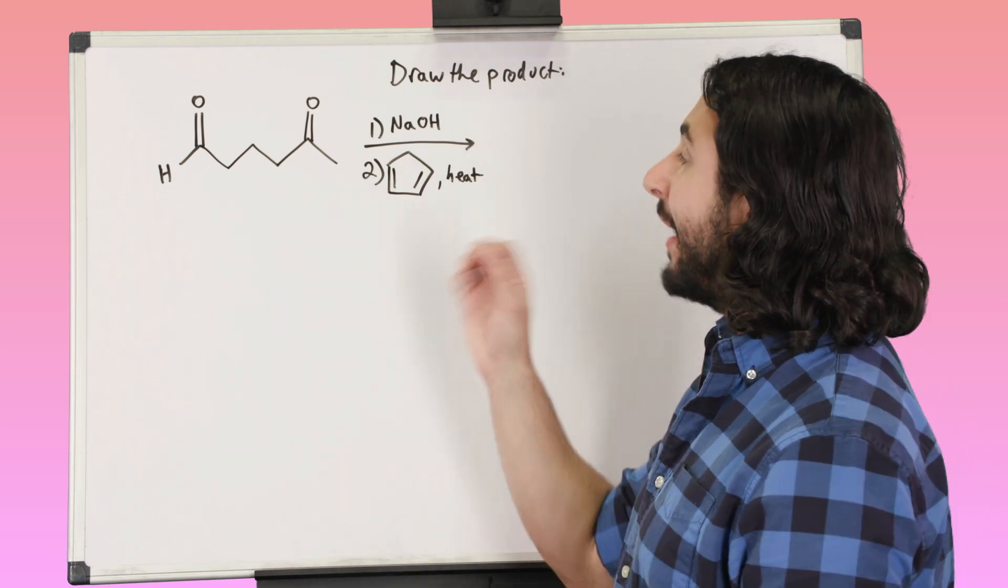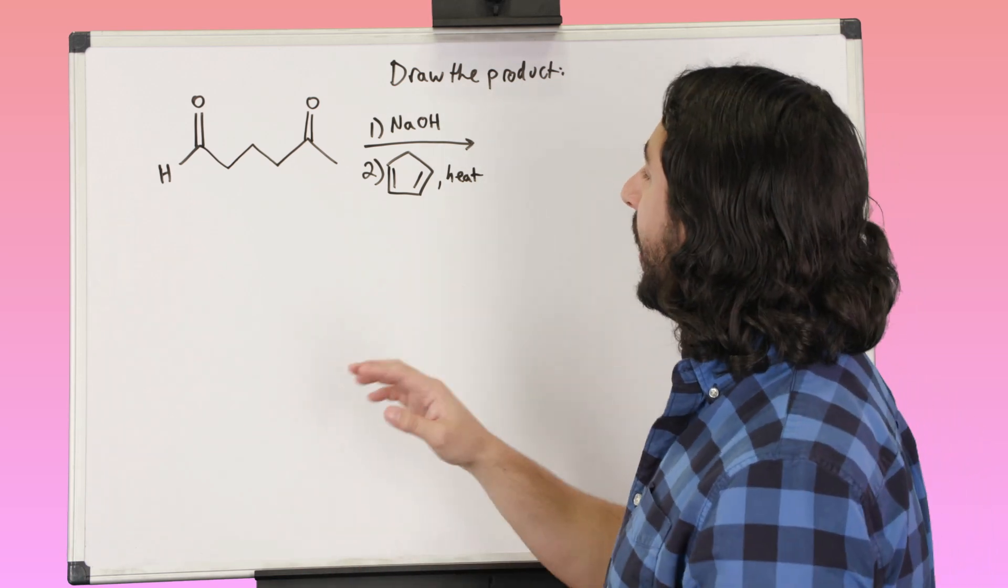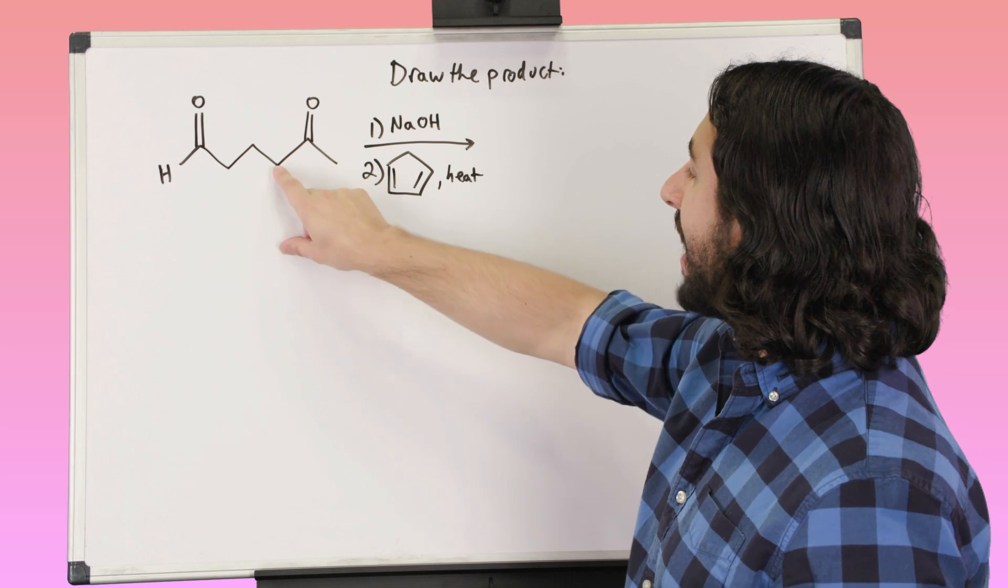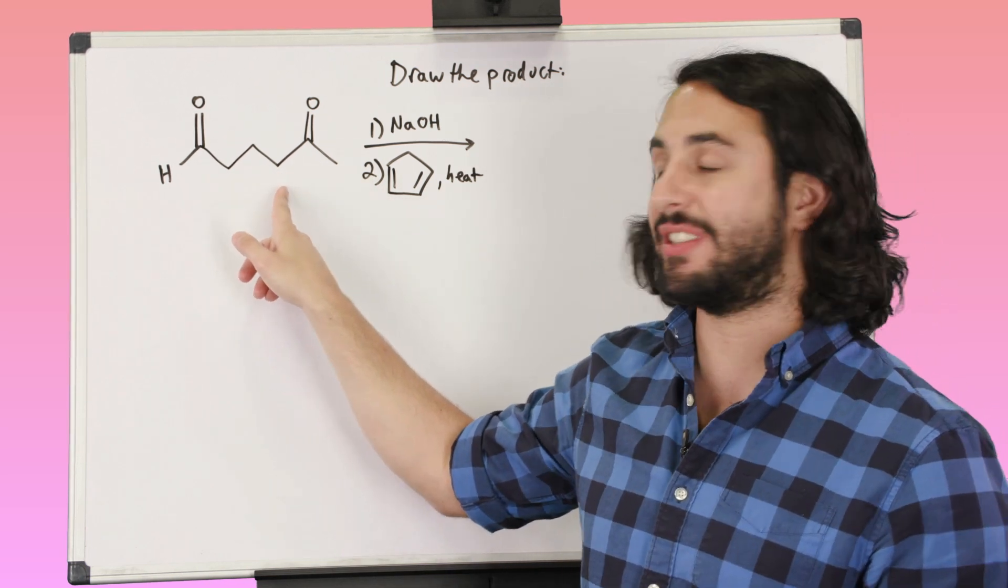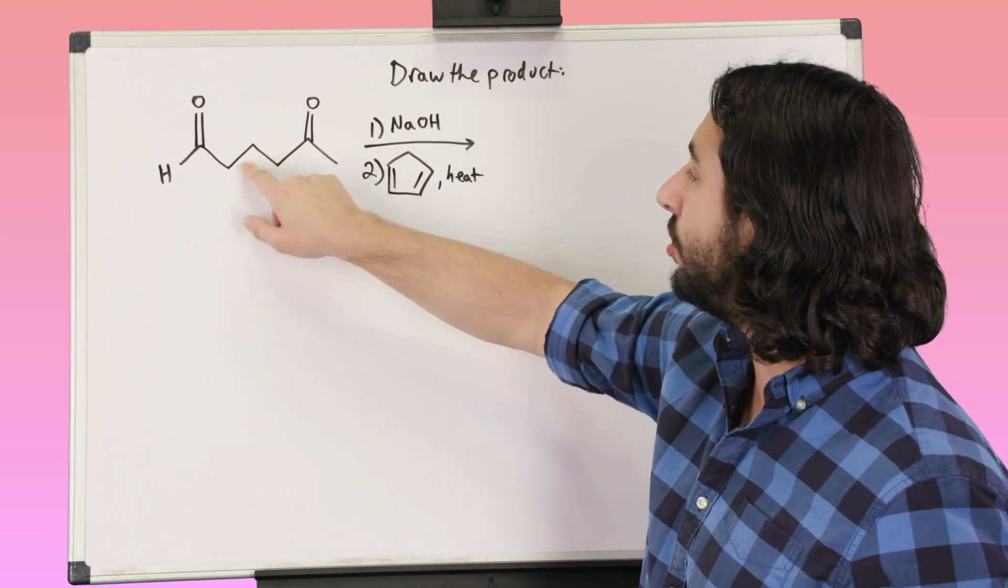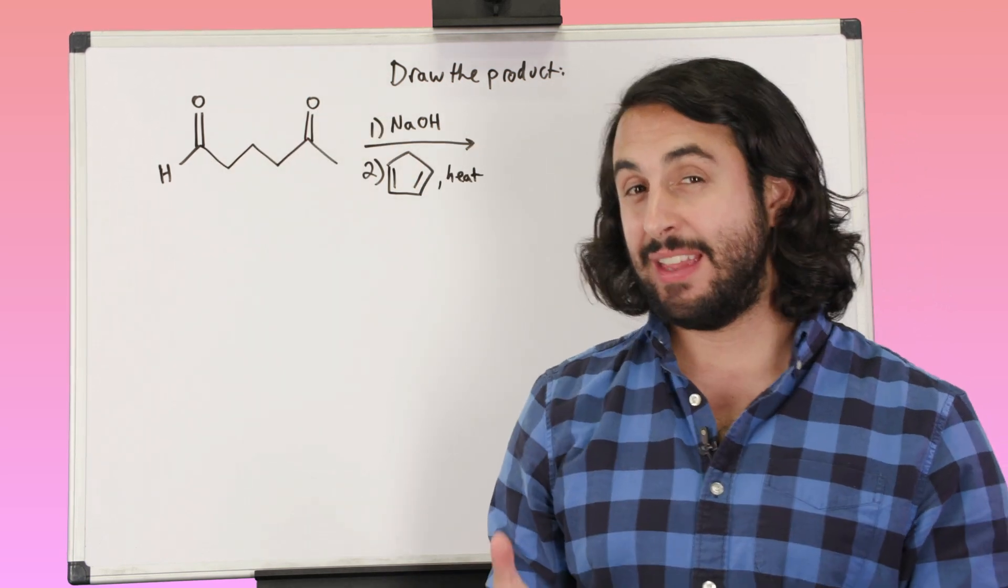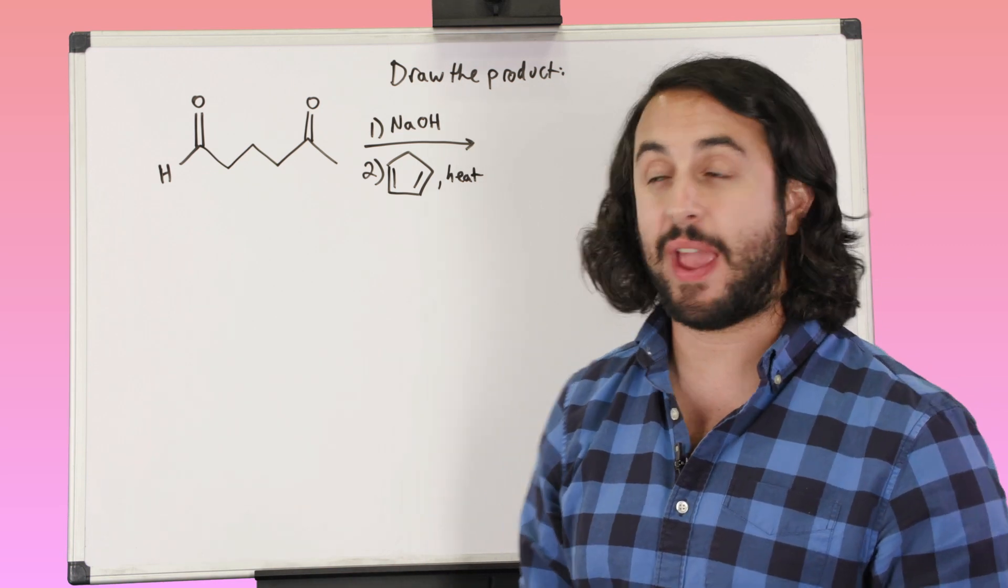Now the thing is, ring size is going to dictate the position of enolization because if we enolize, say here, what size ring is that going to allow us to get? Well this carbon would have to attack this, so that would be a one, two, three, four membered ring. That's not so good. Four membered rings are a little bit too small to be favorable.